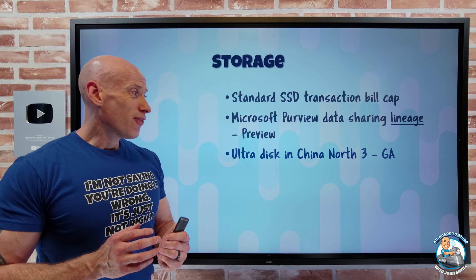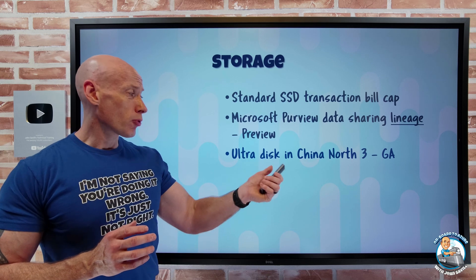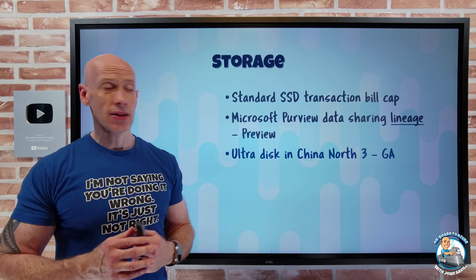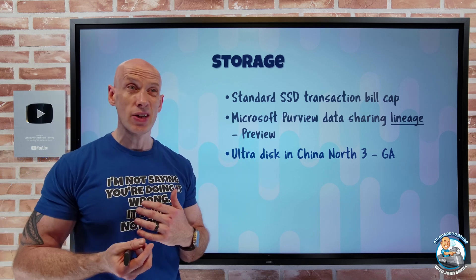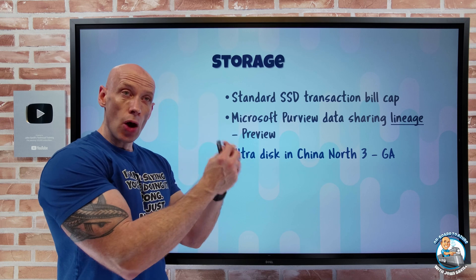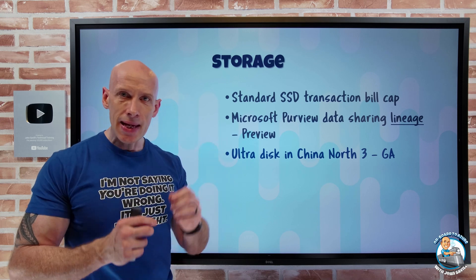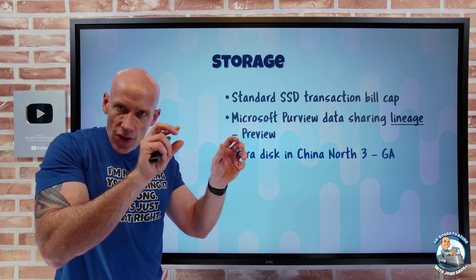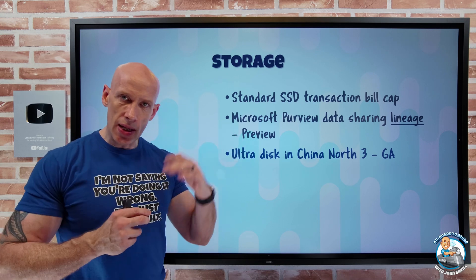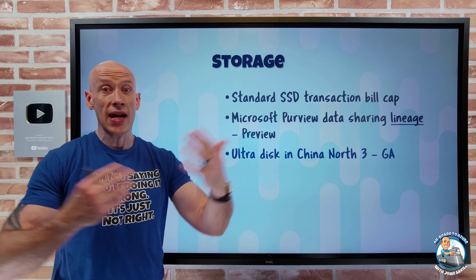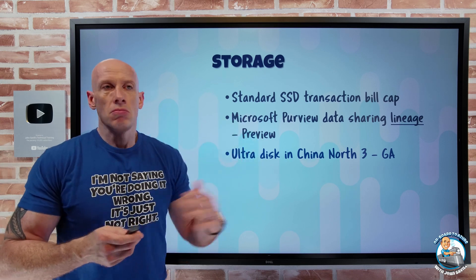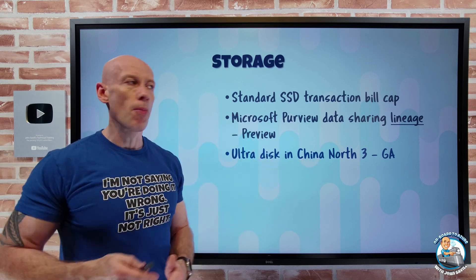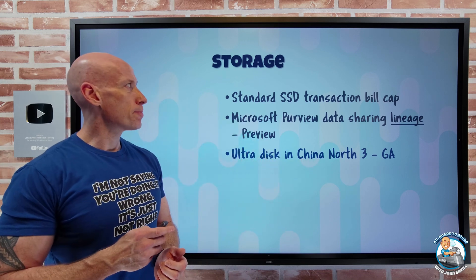For China North 3, UltraDisk is now GA. Remember, UltraDisk is that lowest-latency option where I can individually tweak the IOPS and the throughput dynamically while it's being used, separate from the capacity.